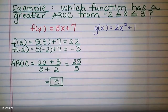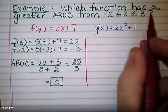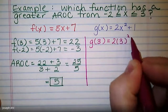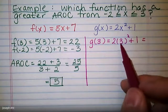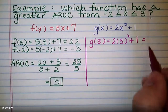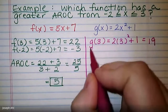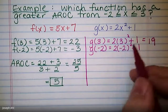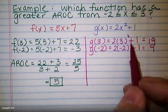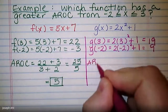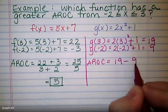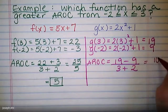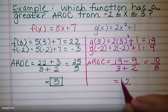Now for g(x), we do the same thing — calculate the average rate of change with endpoints at negative 2 and 3. g(3) = 2(3²) + 1: 3 squared is 9, times 2 is 18, plus 1 is 19. g(−2) = 2(−2²) + 1: negative 2 squared is positive 4, times 2 is 8, plus 1 is 9. The average rate of change is (19 − 9) over (3 − (−2)) = 10 over 5, for an average rate of change of 2.